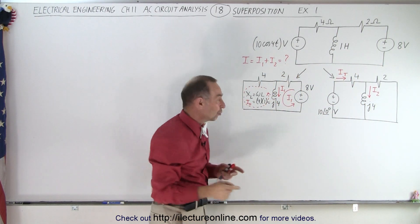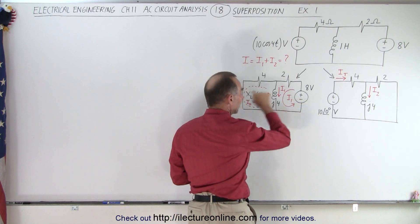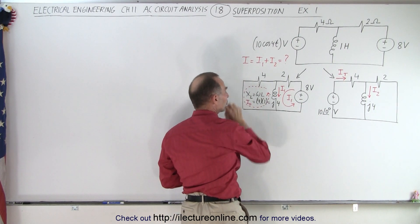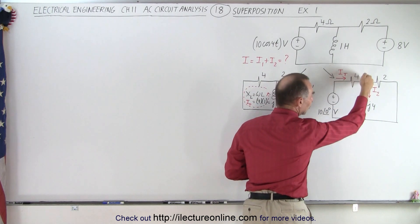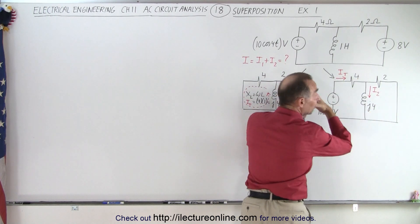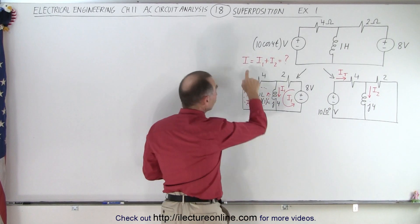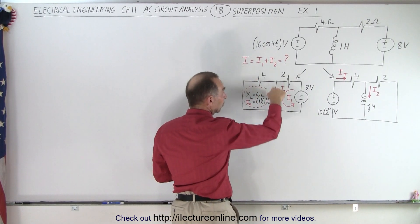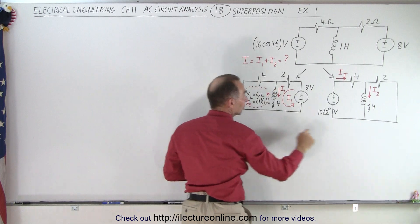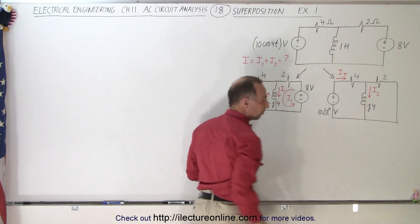It makes it easier to find the current through the inductor using this simplified circuit with one source gone. Then here we'll find the current through this inductor with the other source gone, and then we simply add the two results together. So the current through the inductor is simply the sum of i1 from this circuit and i2 from this circuit.